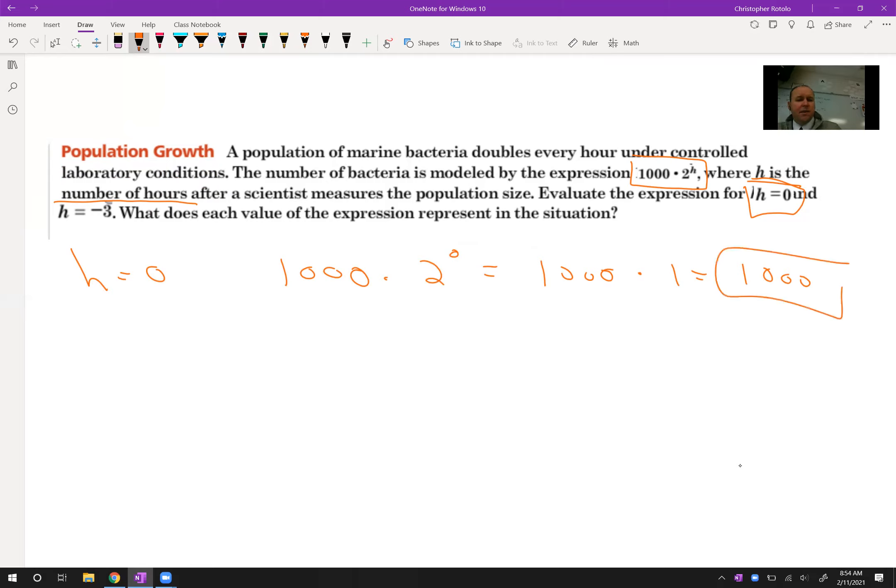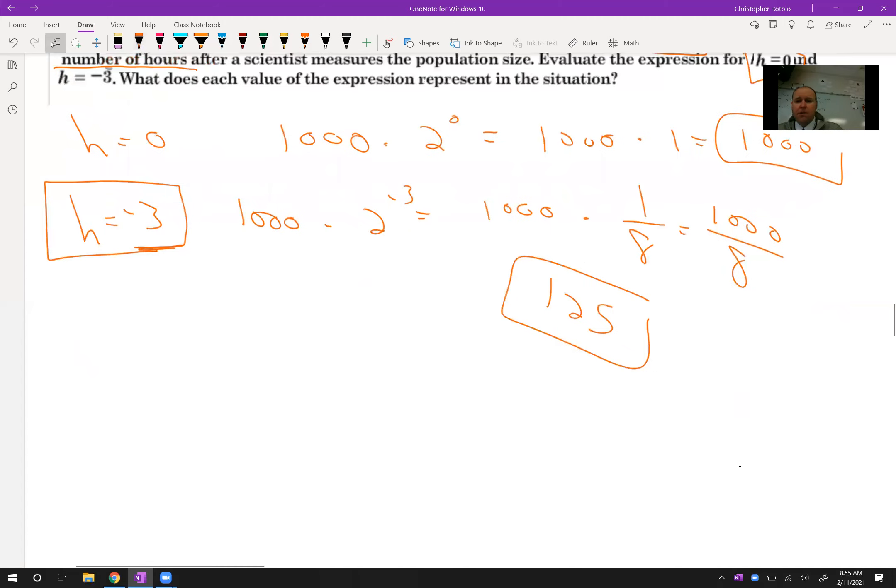Alright, but then what happened is they said, well, that was at hour 0. What was it 3 hours ago? So that's 1,000 times 2 to the negative 3rd. So that's 1,000 times 1 over 2 times 2 times 2 is 8. So I have 1,000 over 8. So how many bacteria were there 3 hours ago? So we can make a judgment on how quickly this is actually growing. So they were 125 three hours ago, and then it grew to 1,000 in three hours. Depending on what type of bacteria this is, that could be kind of concerning. If it's something that's good for us and something we can use as medicine and stuff, that's awesome.